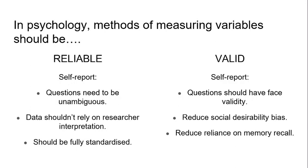Particularly in terms of stress, we might not want to appear like we can't cope with various situations, so we might downplay how difficult we've been finding it or how stressed we've been. Interviews and questionnaires should take steps to reduce social desirability bias. One way interviewers can do that is to build a rapport with the person being interviewed — if you've built a bit of rapport, the participant feels more able to open up, which goes some way towards reducing social desirability bias.